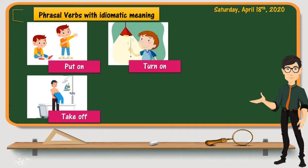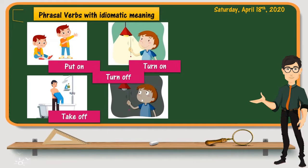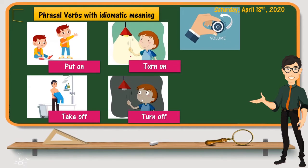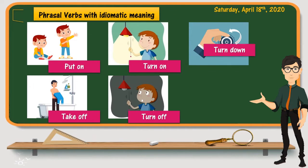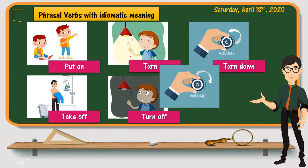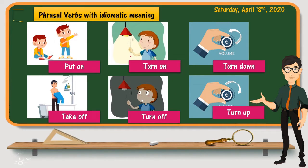One more example is turn on — turn on the TV, turn on the lights — which means to start something. The opposite is turn off, meaning to stop. Another example is turn down — to lower — so turn down the volume means lower the volume. The opposite is turn up — to make it higher.